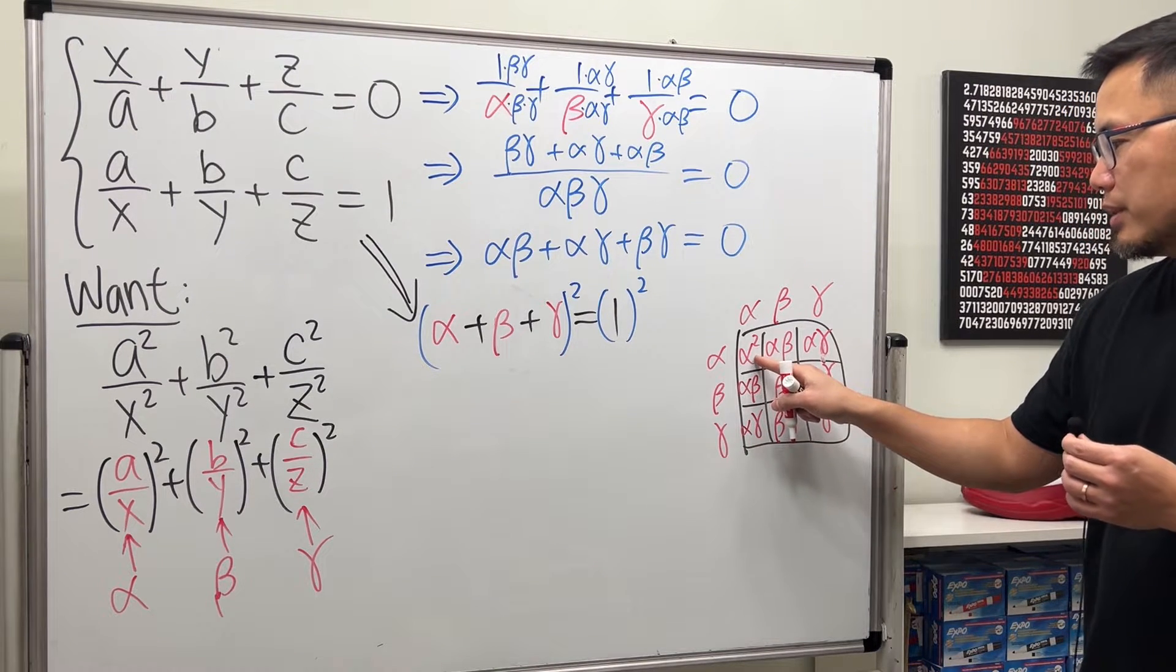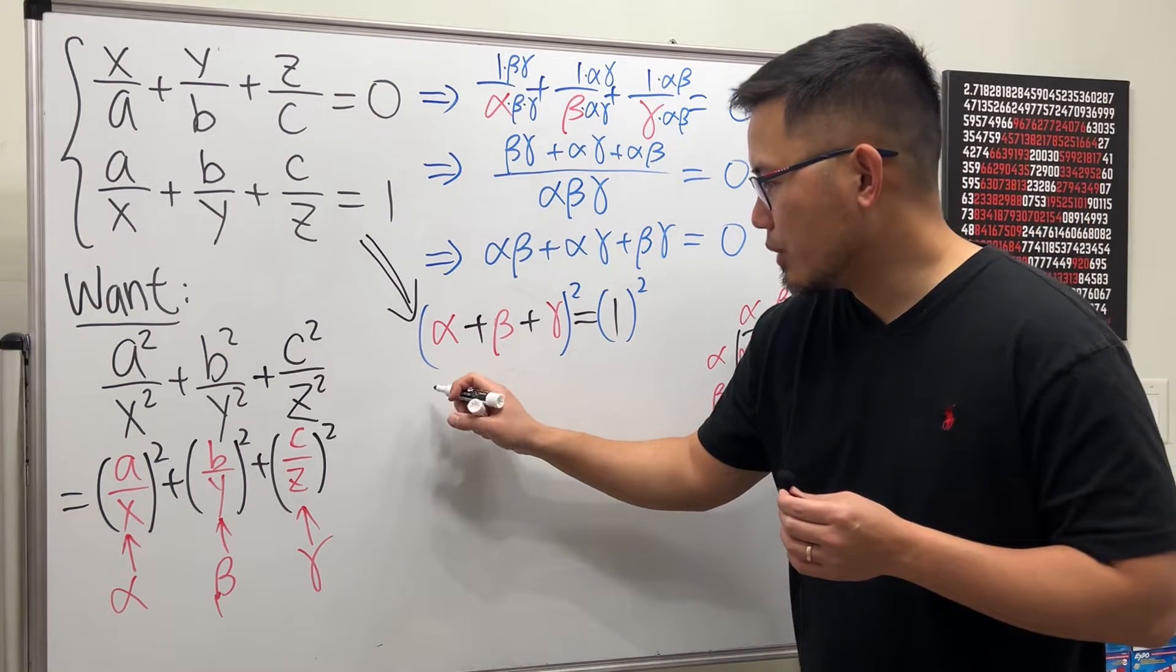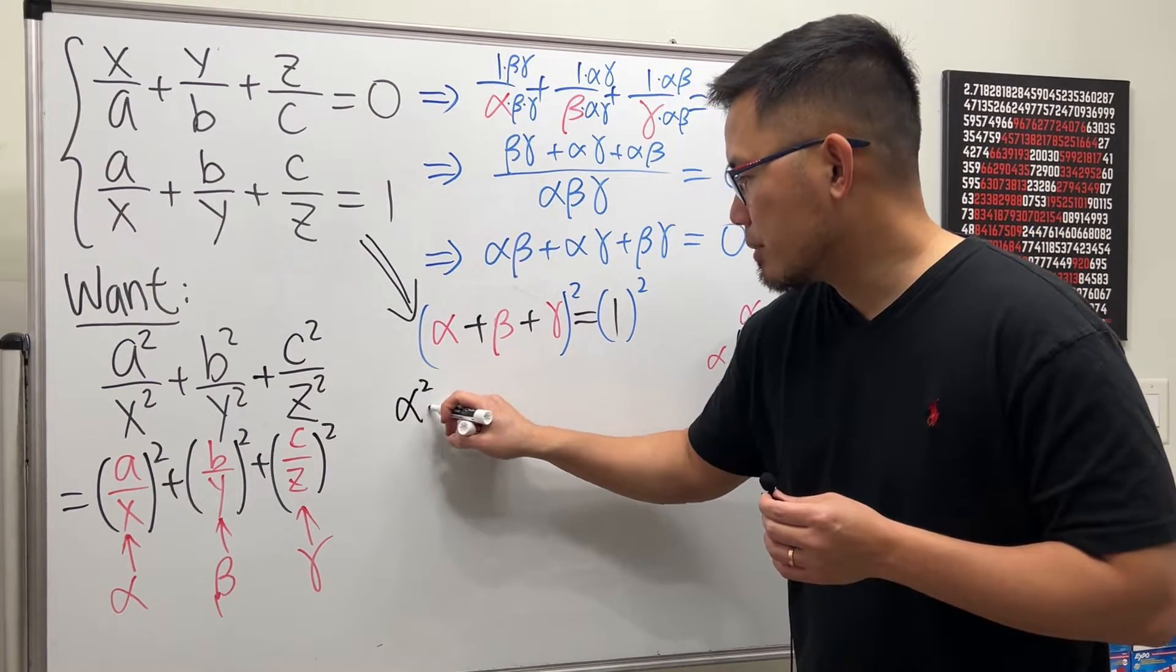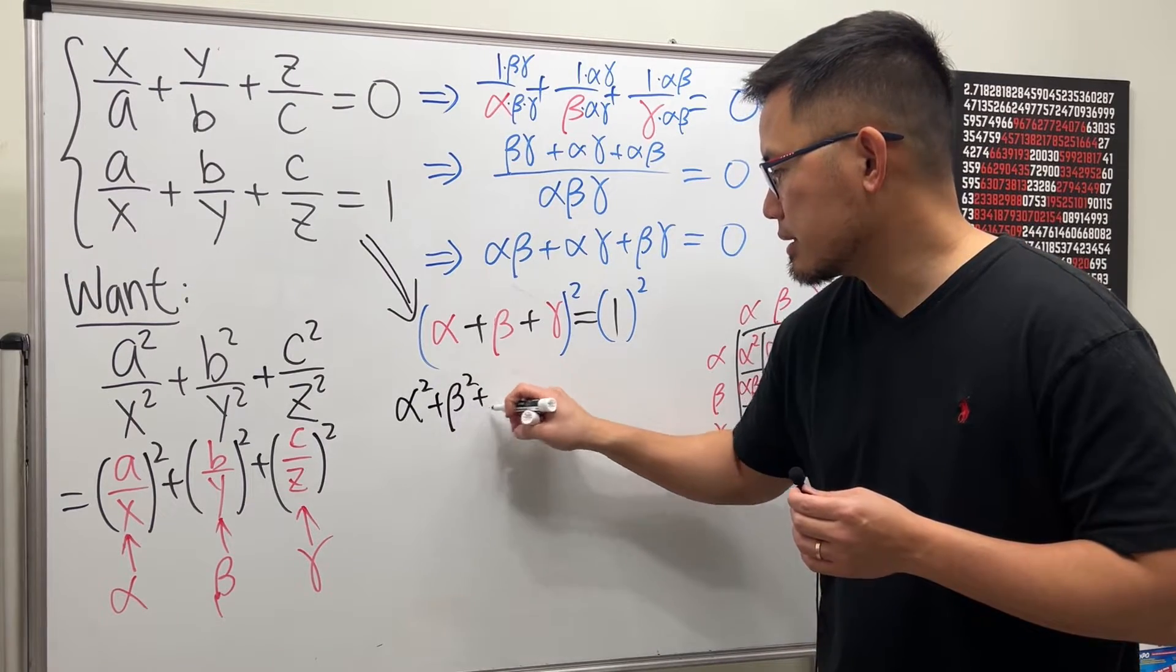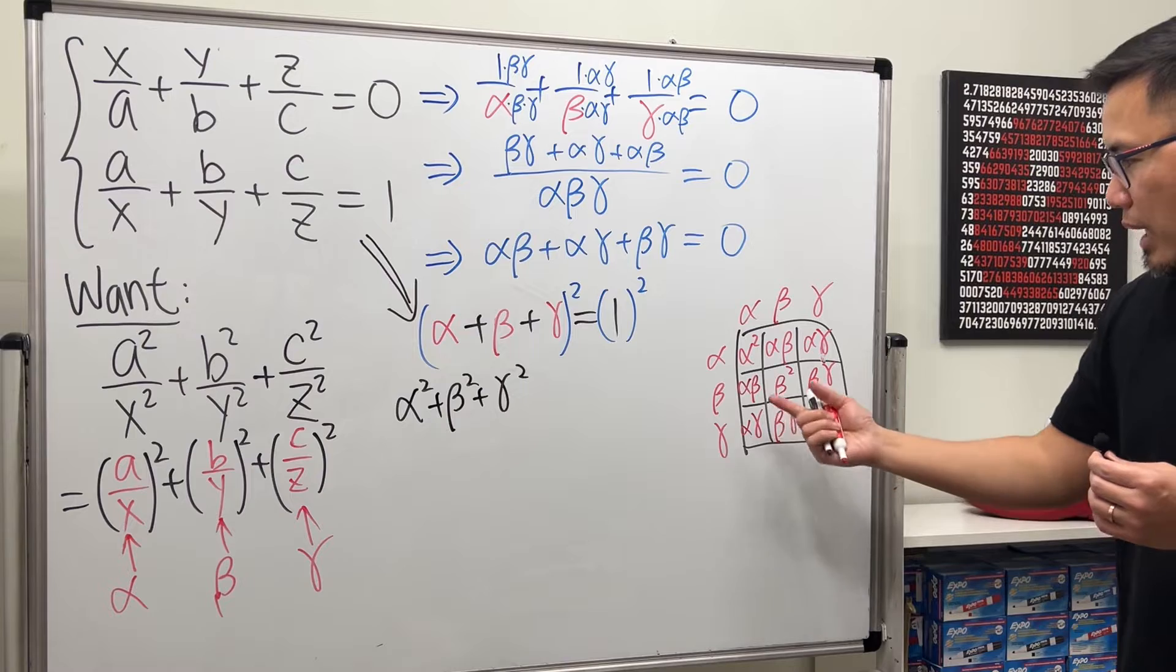So as you can see, we end up with alpha squared plus beta squared plus gamma squared. So this right here we have alpha squared plus beta squared plus gamma squared and that's exactly what we're trying to get but we do have the other parts.